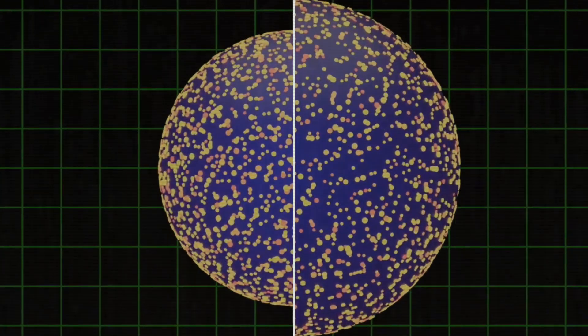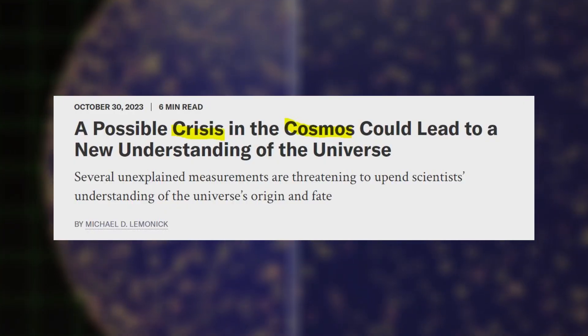You might have heard about the so-called crisis in cosmology. This issue emerged when different methods for measuring the age of the universe started giving inconsistent results, and this discrepancy continues. Cosmologists are still puzzled by this problem.